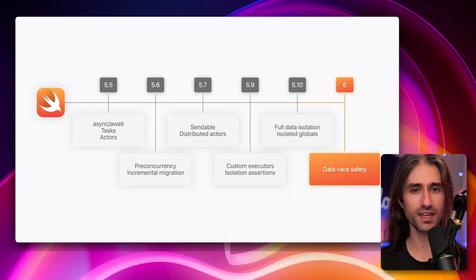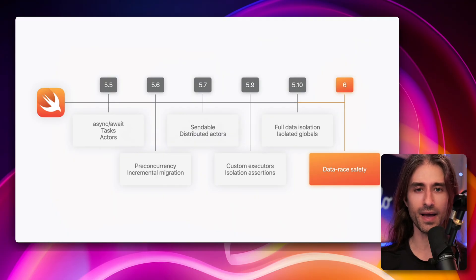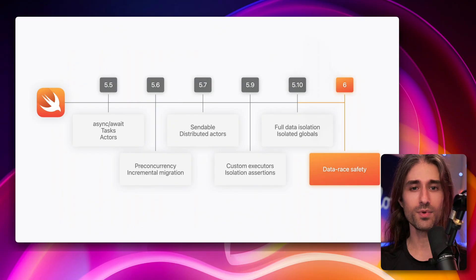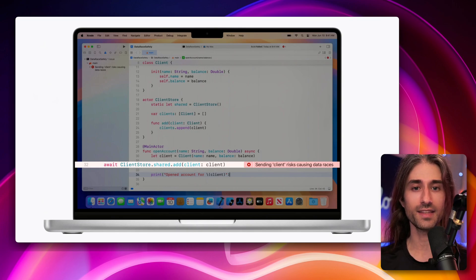This was the culmination of a process that was started with Swift 5.5, which started to introduce concurrency directly into the language with the introduction of async/await, and was supposed to reach its conclusion with Swift 6, which had the goal of making code data race safe by construction. This meant that the Swift compiler would enforce compile-time checks that would make sure that at runtime no data races could happen.